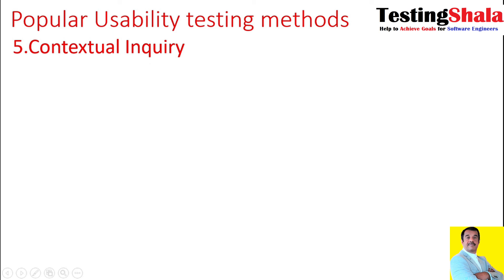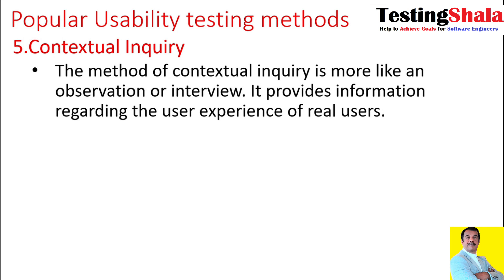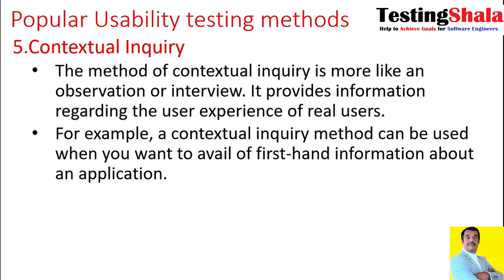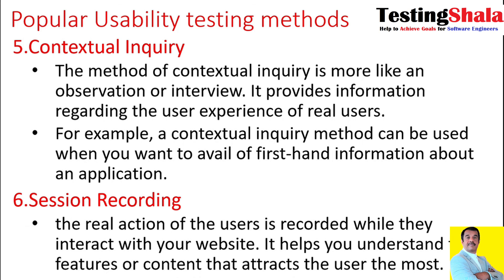The fifth method is contextual inquiry. In contextual inquiry, we perform usability testing based on observation or by conducting interviews with the customer. We try to gather as much information as possible from the real end user, getting first-hand information about the application. The sixth method is session recording, where the real actions performed by the user are recorded. For example, when someone accesses a website, we record the flow of how the user navigates the application, allowing us to get the right information about which features are most crucial.